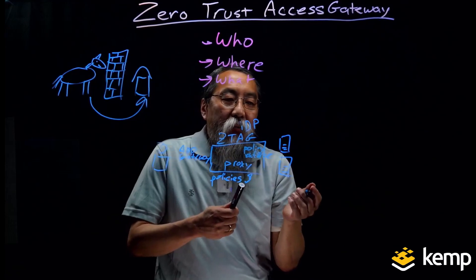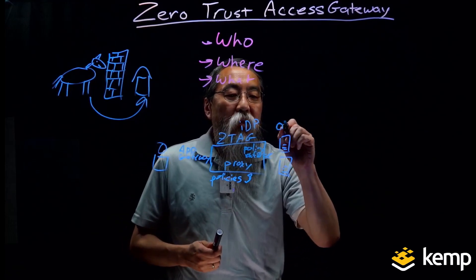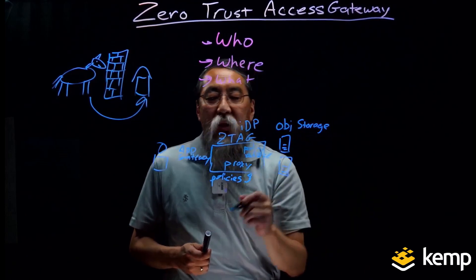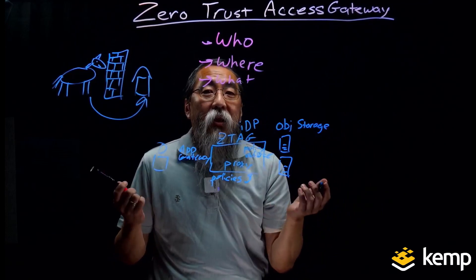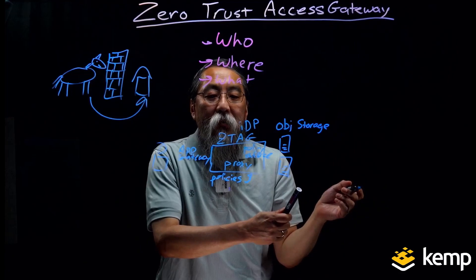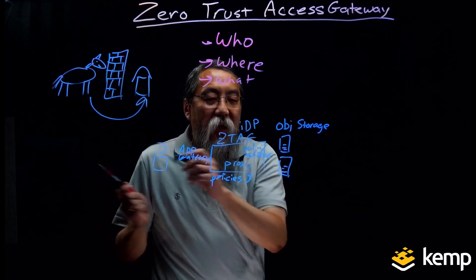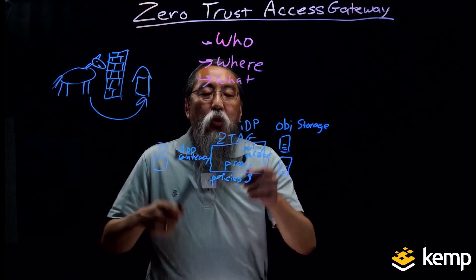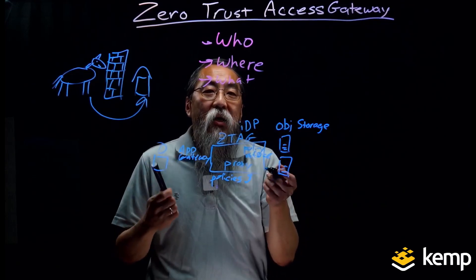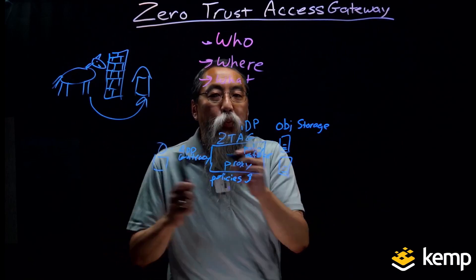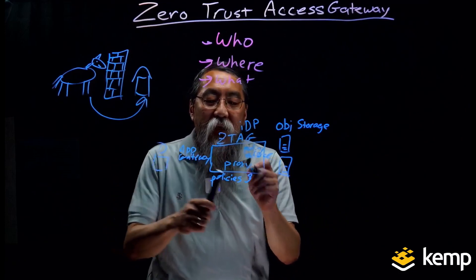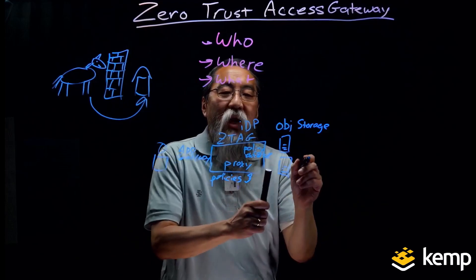Let me give you a use case. Let's assume my application is some sort of object storage database, and I'm a user defined as a content creator. I'm creating these lightboard videos and pushing them to the object storage system for processing. When I connect to this application gateway, it authenticates me through the IDP as a content creator, and as such I have certain privileges — I can read files, but more importantly, I can also push or put files into the system. Based on my information and the policy defined, it will allow me to push these lightboard videos to the object storage system.